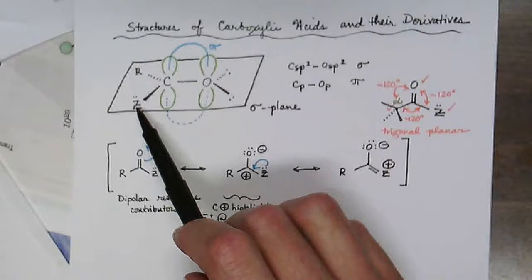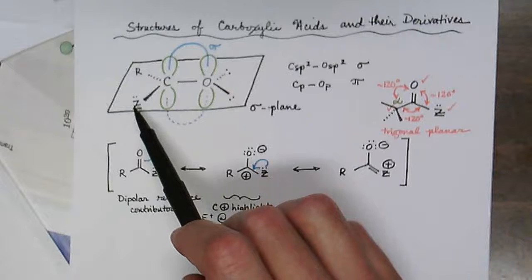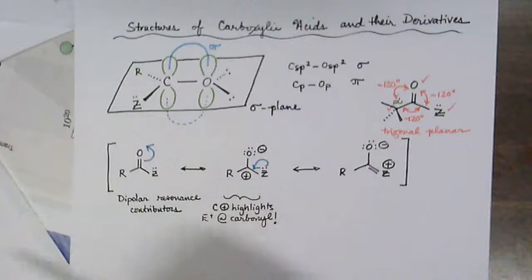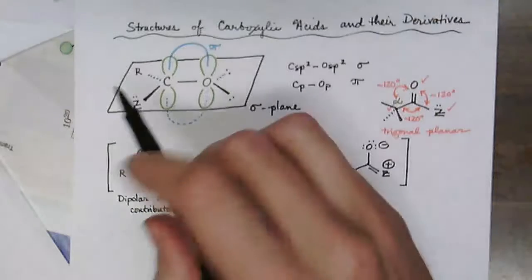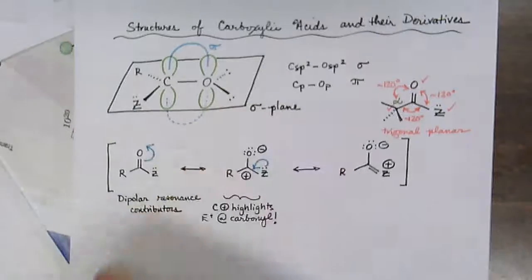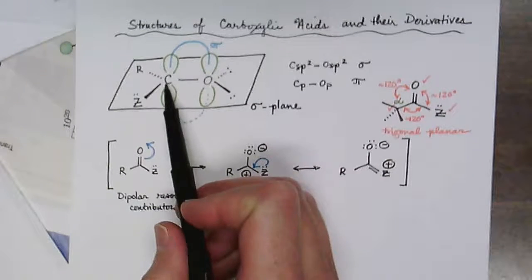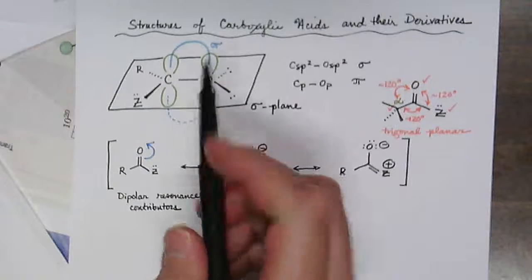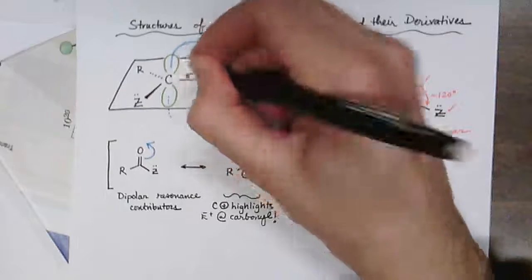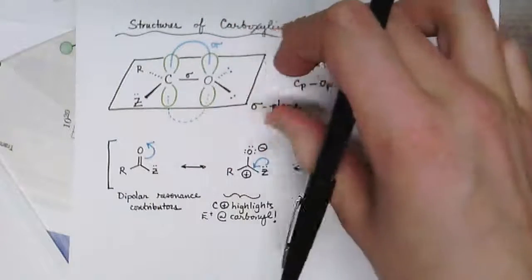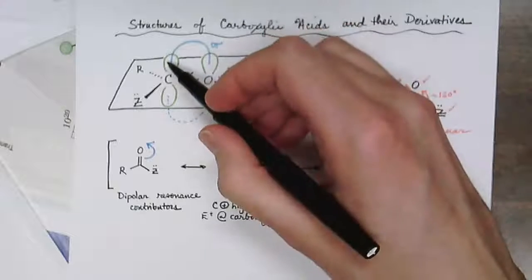an aldehyde and a ketone respectively, which have distinctly different reactivities than carboxylic acids and their derivatives. So for example, when Z equals OH, that would be the structure of a carboxylic acid. The carbon-oxygen sigma bond shown here we're looking at this edge on